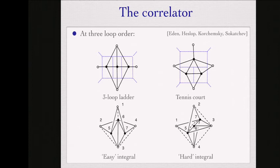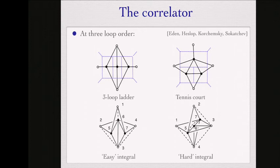At three loops you get four integrals plus their rotation: this one, which is the generalization of what we had at one and two loops to the tennis court, which can be shown to be related to the other one up to an overall factor, and then two new integrals. The basic idea is how can you use all these techniques introduced in the previous lectures to construct a unique answer—you construct an ansatz, and in the end you get a unique function that satisfies all the constraints.